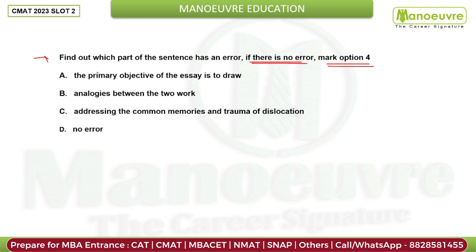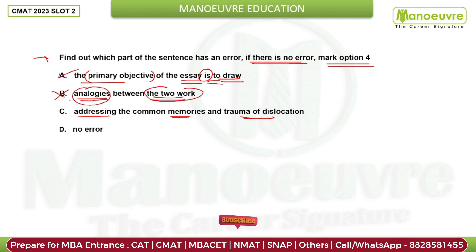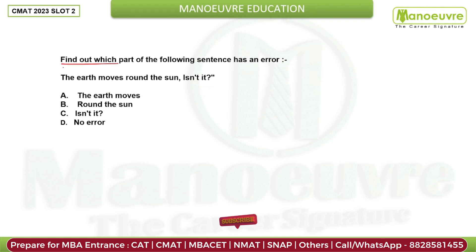The sentence reads: 'The primary objective of the essay is to draw analogies between the two work, addressing the common memories and trauma of the dislocation.' The primary objective is singular, so 'is' is correct here. However, 'analogy' is written incorrectly — 'analogies between the two work' is wrong. So this part of the sentence has the error.